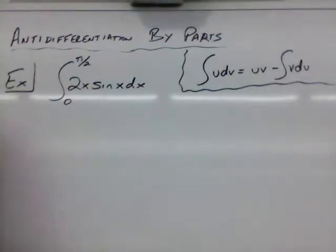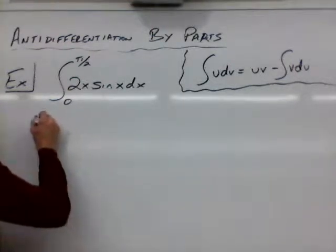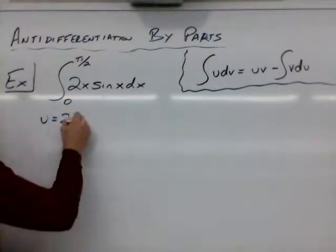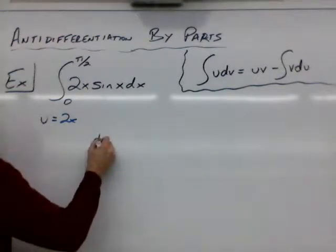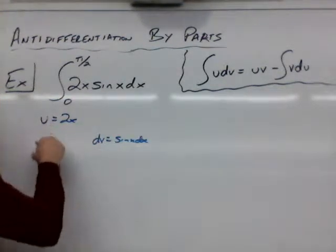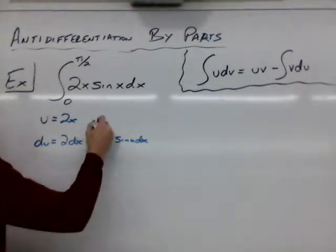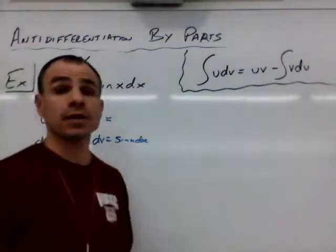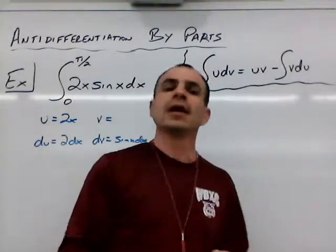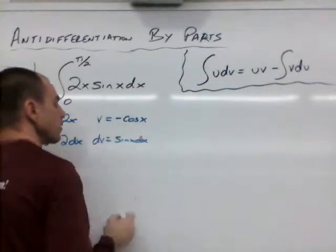So we're going to have u equal to 2x, and dv will be the sine of x dx. So we have to derive u to get du, which will be 2 dx, and we have to anti-derive dv to get v, and the anti-derivative of sine x is the opposite of cosine x.